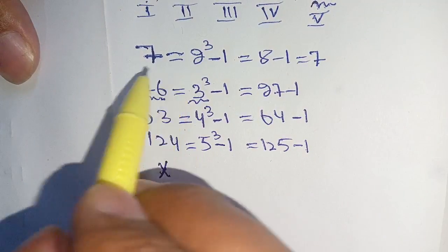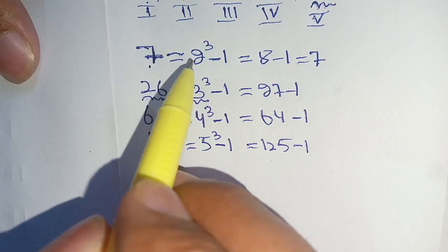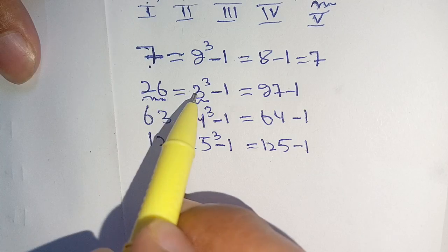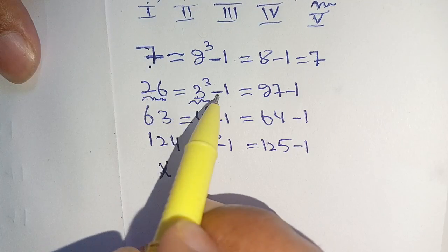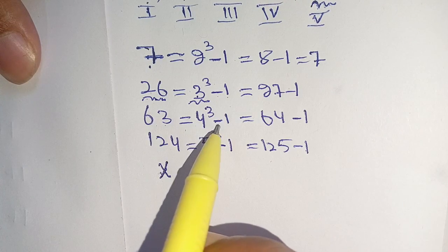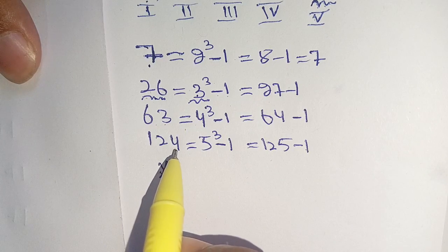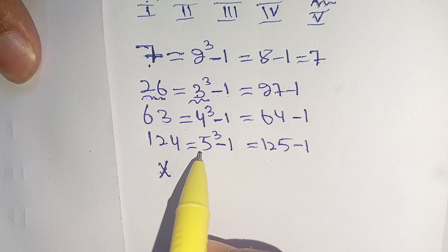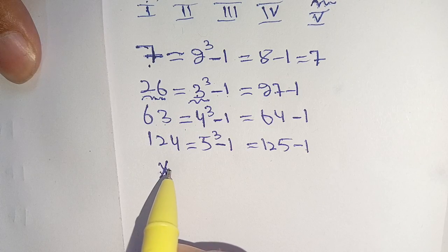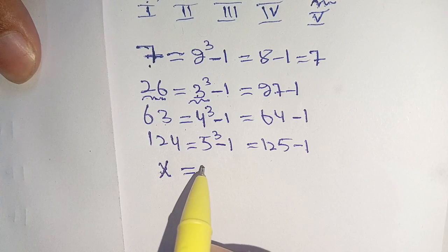So the pattern is: the first term is made by 2 cubed minus 1, the second term by 3 cubed minus 1, the third term by 4 cubed minus 1, and the fourth term by 5 cubed minus 1. Therefore, our fifth term x will be made by 6 cubed minus 1.